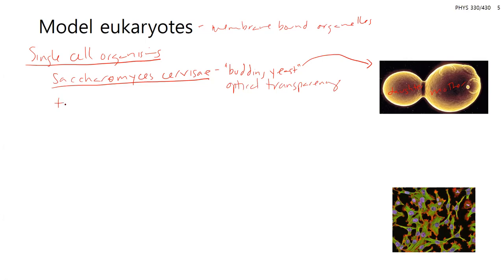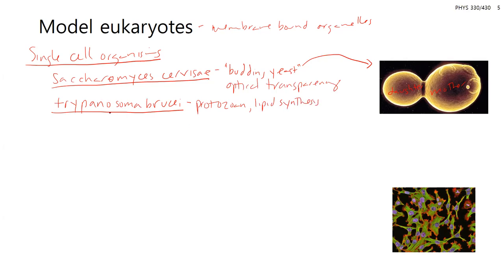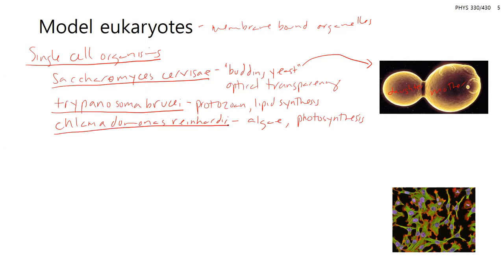Other single-cell eukaryotes include Trypanosoma brucei, a protozoan commonly used for lipid synthesis studies. There's also a plant single-cell organism — a type of algae — commonly used for studying photosynthesis, including the electron transport processes and chloroplasts.